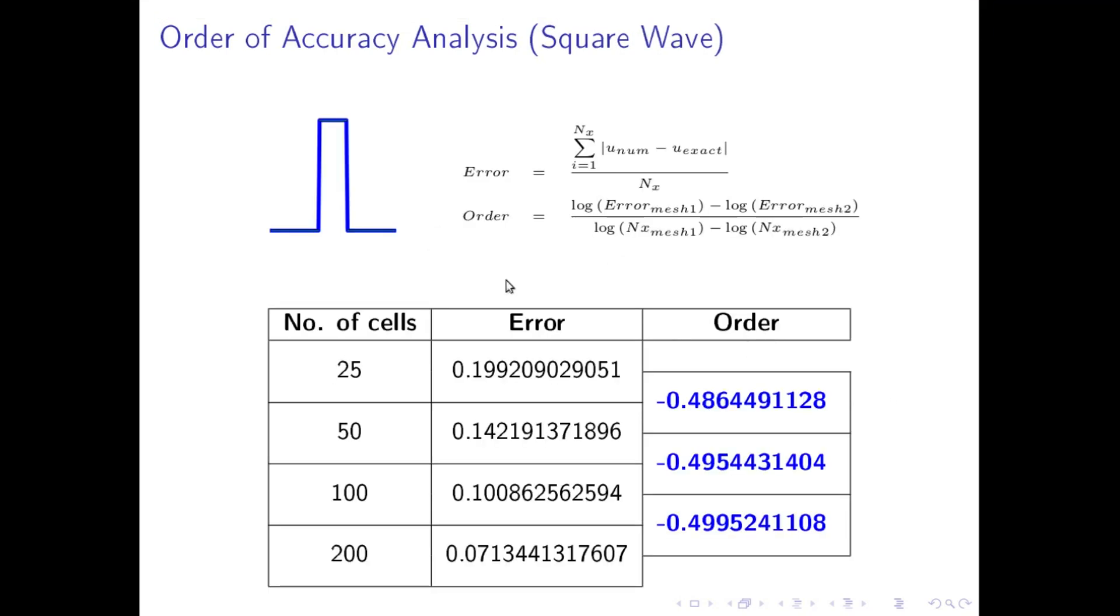So if we start doing this analysis for a square wave, we will see that as the number of cells increases, the error reduces obviously, that is expected as we already have seen in the plot. The order of accuracy is given by this formula and it actually goes up to something around 0.5. Don't consider this minus sign, it only says that the slope is negative. That is obviously the error is reducing as we increase the mesh cells. So the order is 0.48 and it goes up to around approximately 0.5 for higher number of cells.